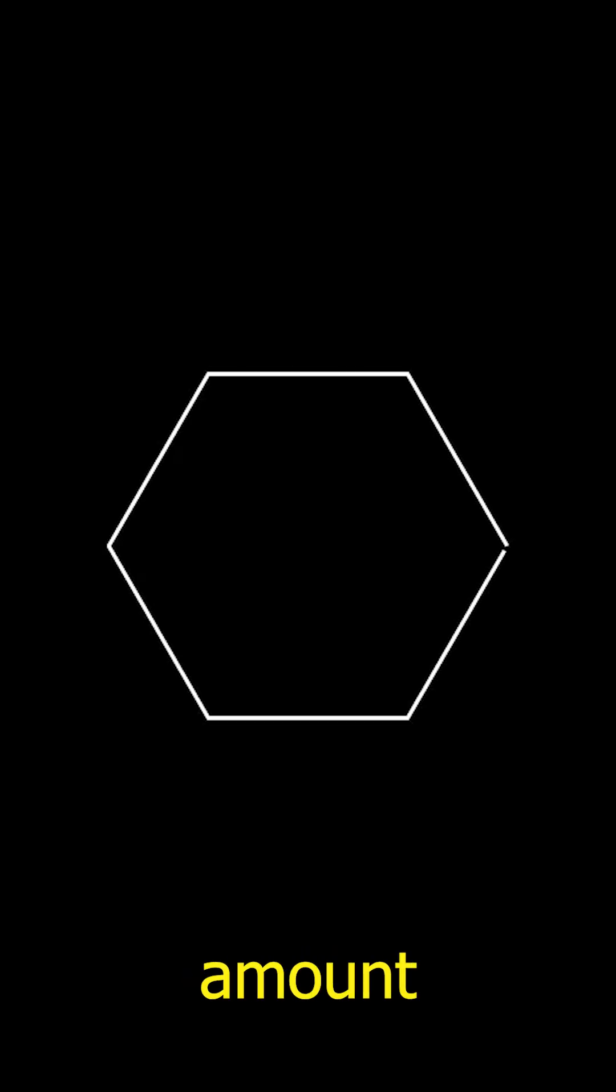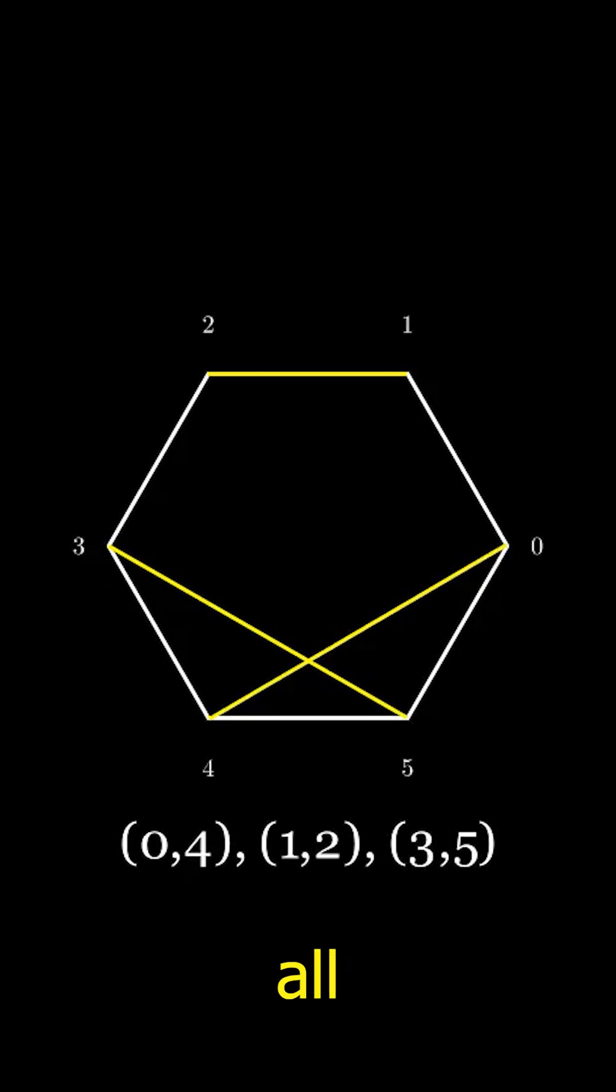Consider a polygon with an even amount of sides. If we draw lines connecting pairs of vertices, making 1 to 1 pairs, and we do this for all vertices, we will get what is called a chord diagram.